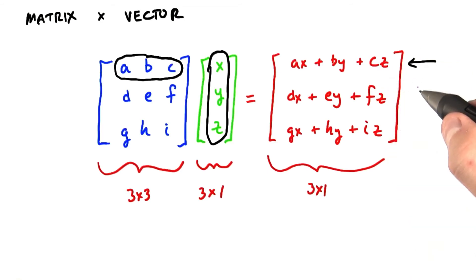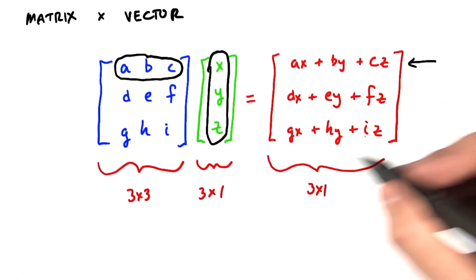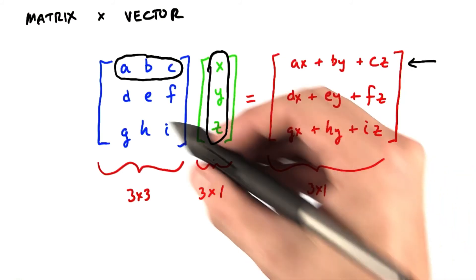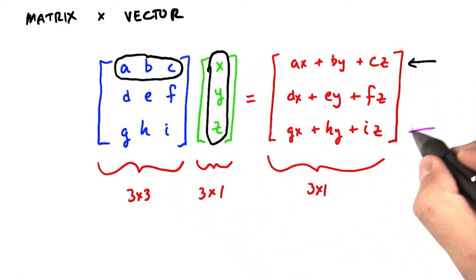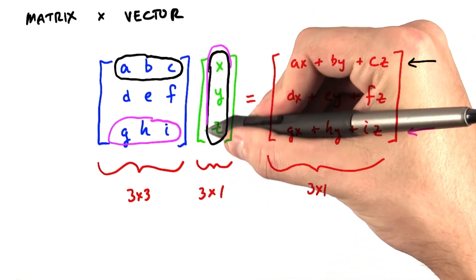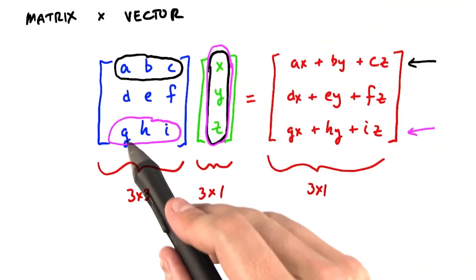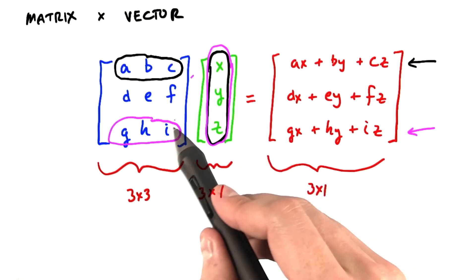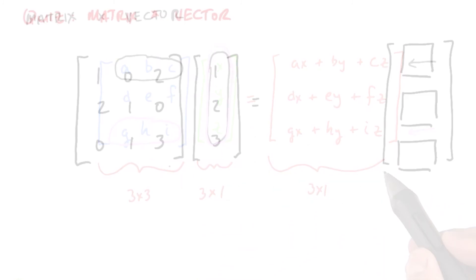For each additional row in the output matrix, we simply do another one of these dot products. So, for instance, to compute this value here, we dot product this vector with, again, our input vector to get g times x plus h times y plus i times z.